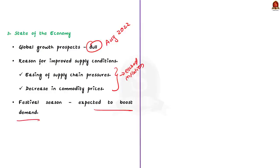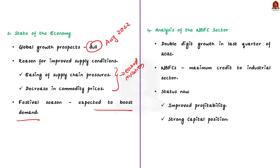After this, the bulletin evaluates the performance of non-banking financial company sector in the year 2021-22. The consolidated balance sheet of the NBFC sector exhibited double-digit growth in the last quarter of 2021. NBFCs continued to provide maximum credit to the industrial sector, followed by retail, services, and agriculture. The profitability of NBFC sector improved and its capital position also remains strong.